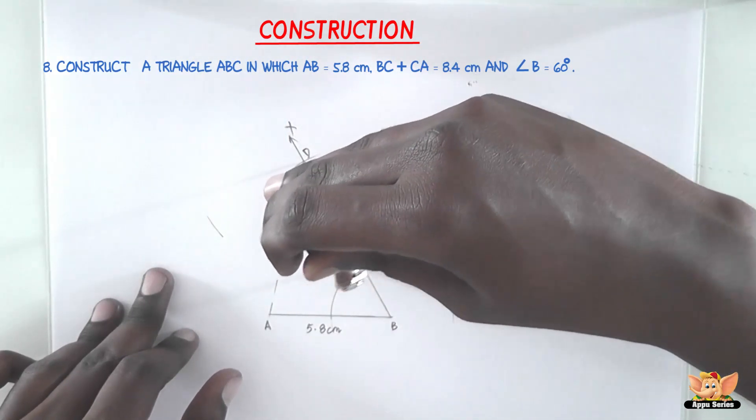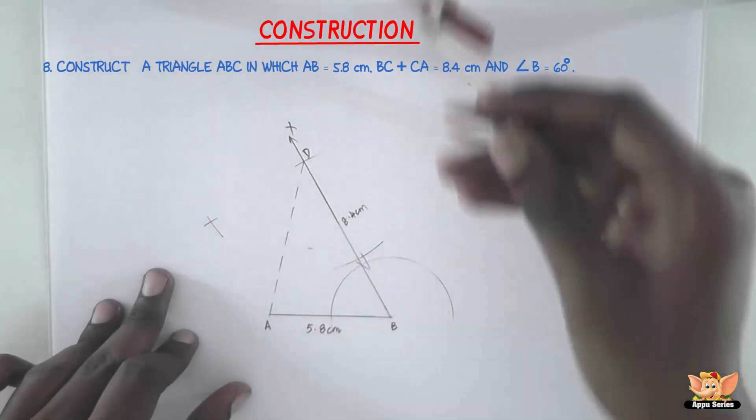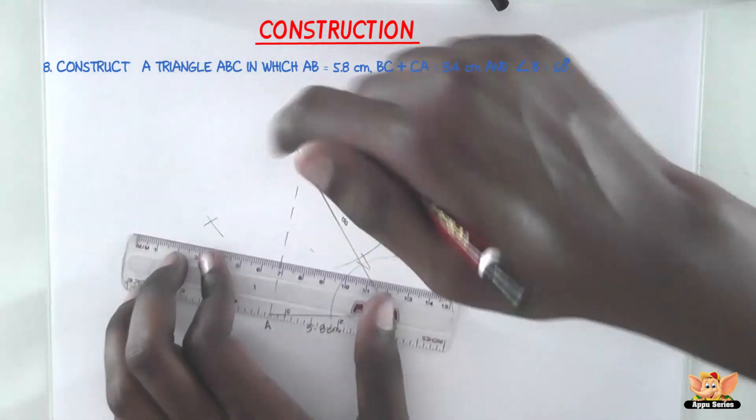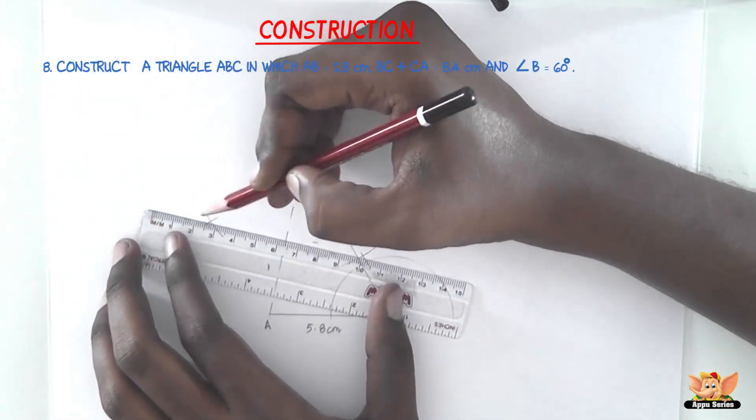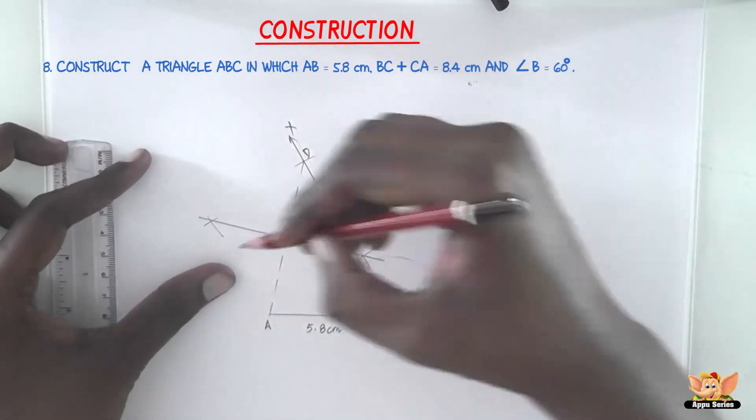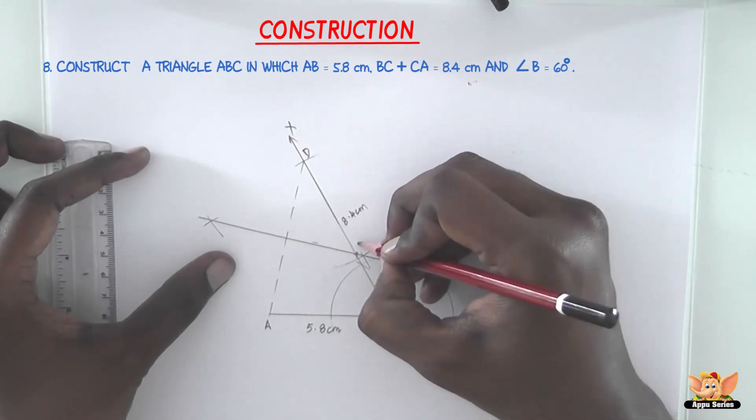Again, keep the compass at point A and cut those arcs. Now we've got two more points. Join these points. This perpendicular bisector cuts BD at this point. Let's call it C. Now join AC.